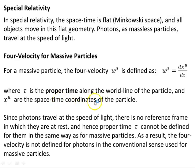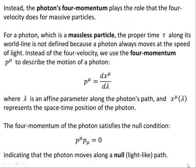Since photons travel at the speed of light, there is no reference frame in which they are at rest. So there's no wristwatch. And hence proper time tau cannot be defined for them in the same way as for massive particles. As a result, the four velocity is not defined for photons in the conventional sense used for massive particles. So here's a little bit of a quandary there. Instead, the photons four momentum plays the role that the four velocity does for massive particles, and that'll be the subject of this video and the next.